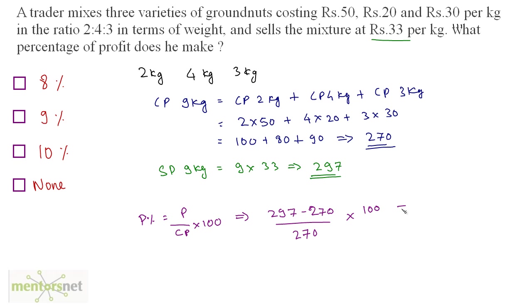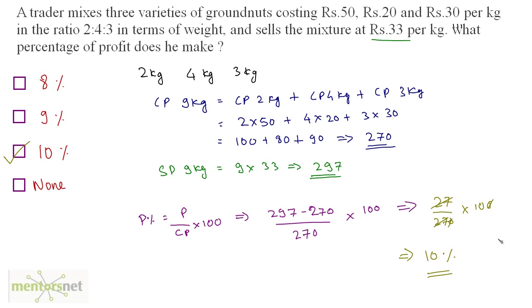Profit is selling price minus cost price, which is 297 minus 270 equals 27, divided by the cost price 270, times 100. So the profit percentage is 10%. Option C is the correct answer.